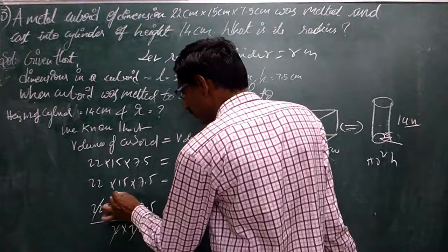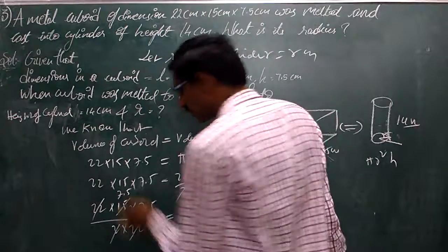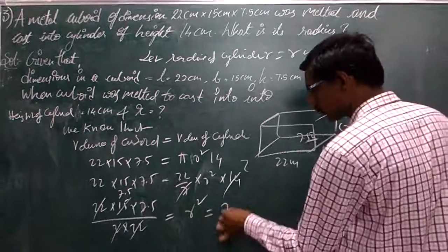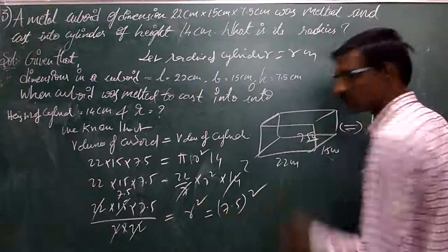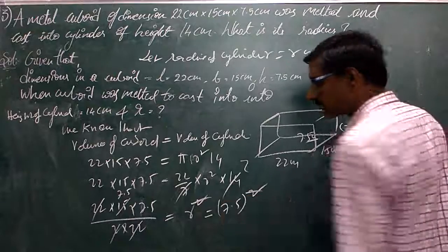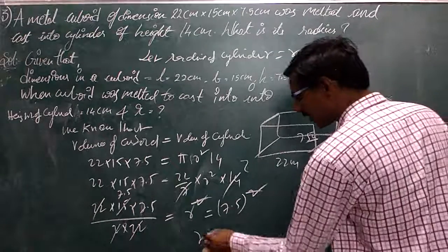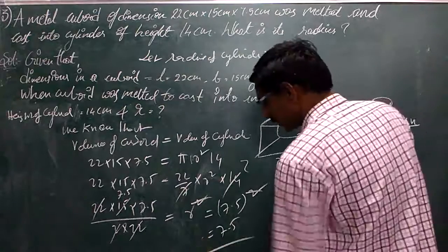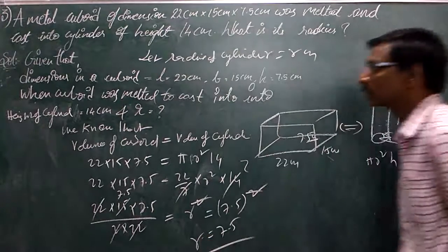This is 7, 7.5. 15 is here, 7.5 is here. If we solve, R squared is equal to the calculation result.